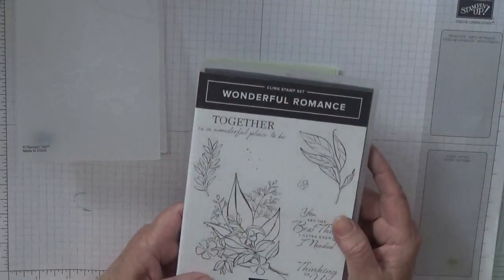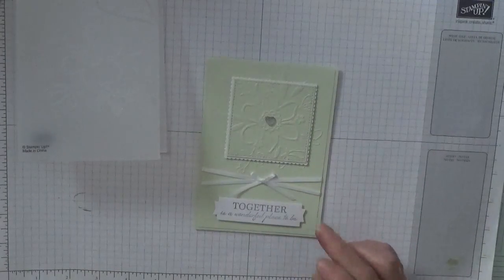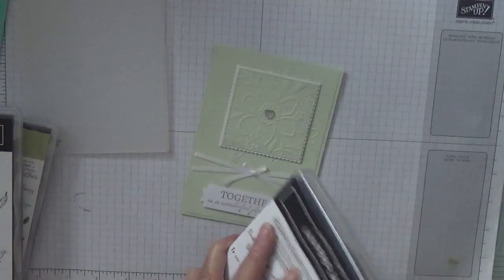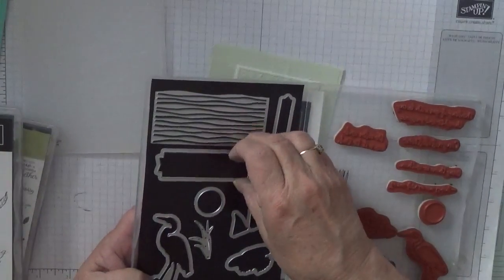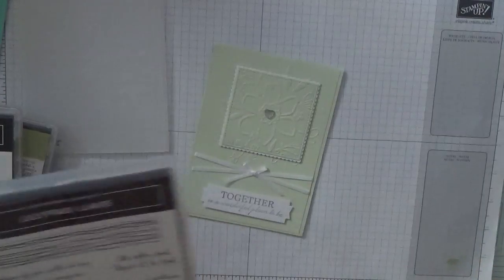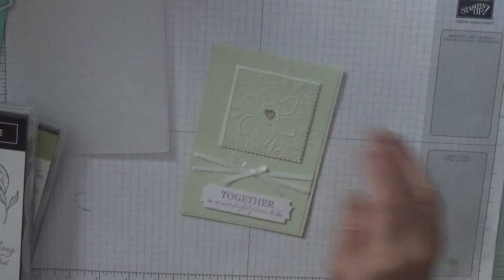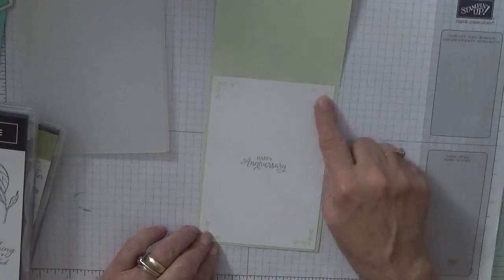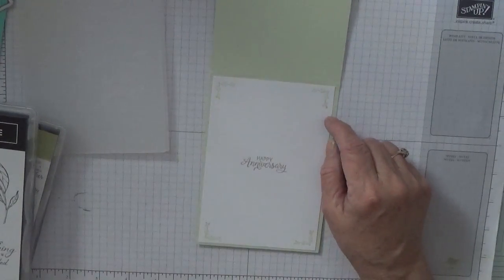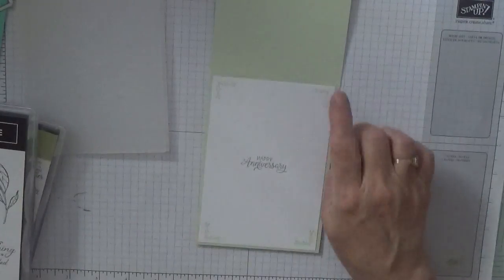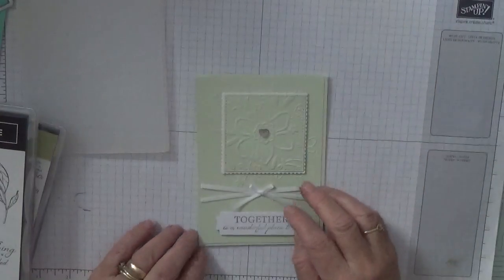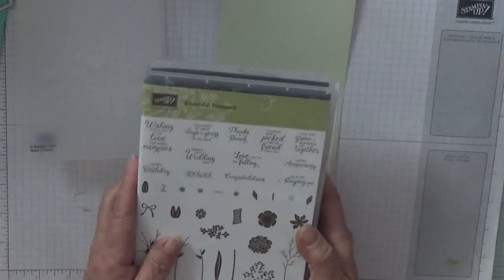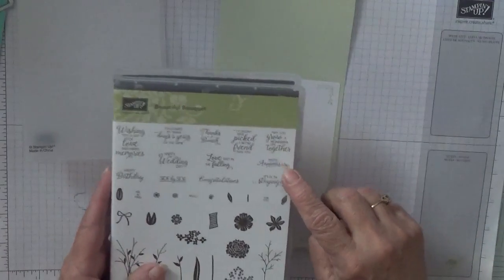The sentiment has come from the stamp set Wonderful Romance and it says 'together it's a wonderful place to be'. The tag for that sentiment I got from Lily Paddle Lakes dies, or the matching dies for that stamp set. Inside I use my Hold On To Hope, the little corner leafy thing there. I do like that stamp, I like the corner things. And the sentiment happy anniversary I got from Beautiful Bouquet.